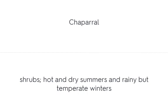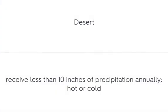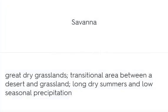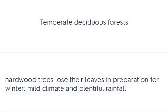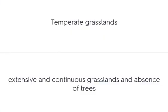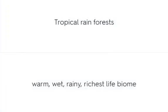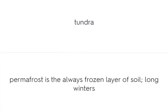Chaparral: shrubs, hot and dry summers, rainy but temperate winters. Desert: receives less than 10 inches of precipitation annually, can be hot or cold. Savanna: great dry grasslands, a transitional area between a desert and grassland, with long dry summers and low seasonal precipitation. Taiga: wet and cold climates, ideal for growth of massive coniferous forests; the largest terrestrial biome. Temperate deciduous forests: hardwood trees lose their leaves in preparation for winter, mild climate and plentiful rainfall. Temperate grasslands: extensive and continuous grasslands with an absence of trees. Tropical rainforests: warm, wet, rainy, and the richest life biome. Tundra: permafrost is the always-frozen layer of soil, with long winters.